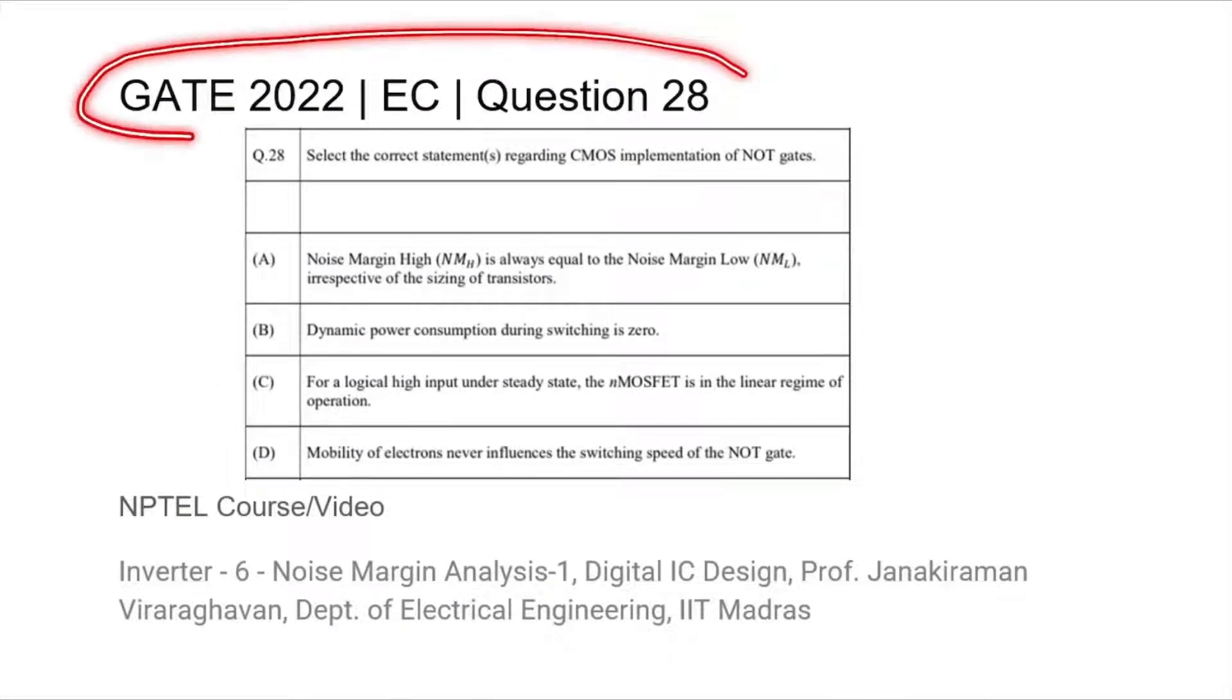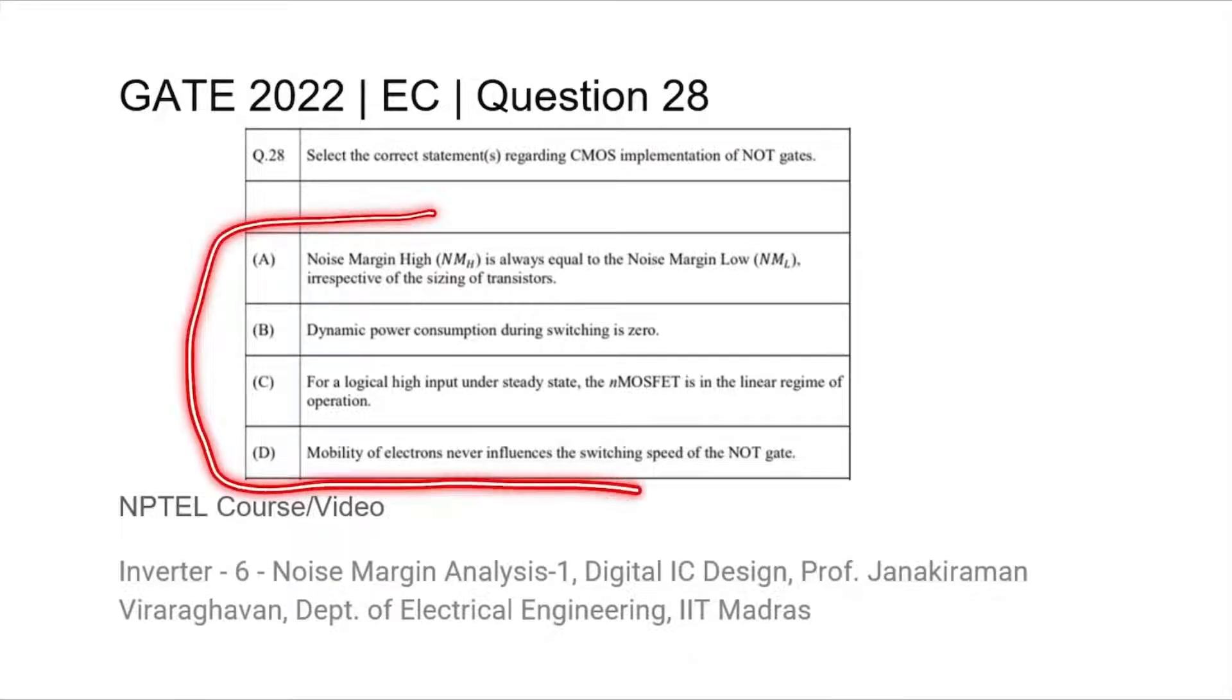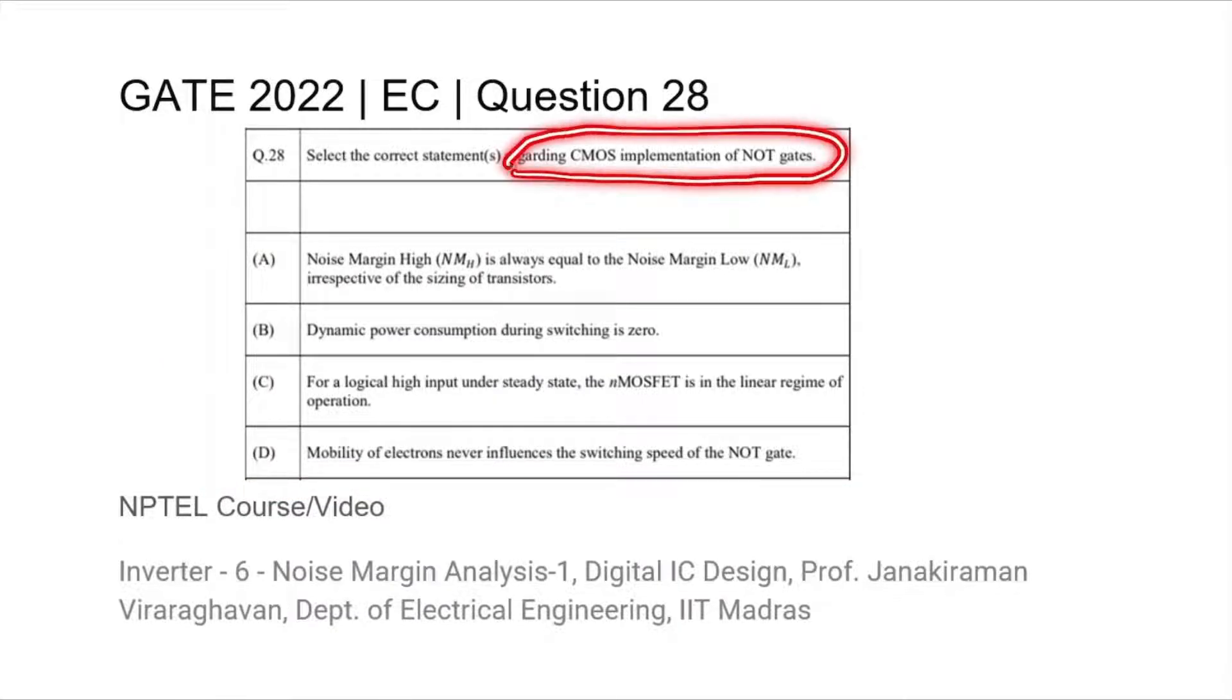This is question 28 from the GATE 2022 EC paper, where we are asked to find which of the following four statements is correct regarding the implementation of a NOT gate in CMOS circuit.